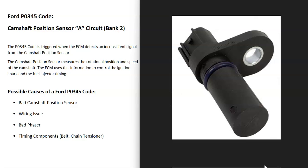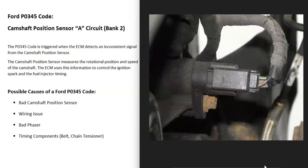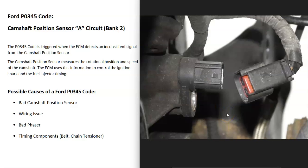What could be some possible causes of a P0345 code? Well, the first thing is it could be a bad camshaft position sensor — it might have just failed and just need to be replaced, so you can go and test it to see if it has failed. It could also be the wiring going to the camshaft position sensor. Anything wrong with the wiring — an open, a short, a bad connection — is going to cause the same issues as a bad sensor, so that can also be tested.